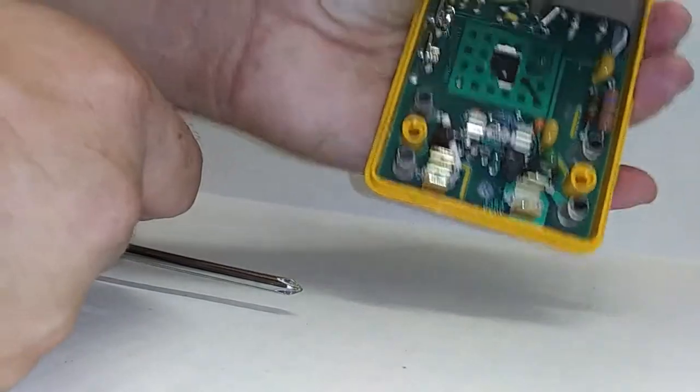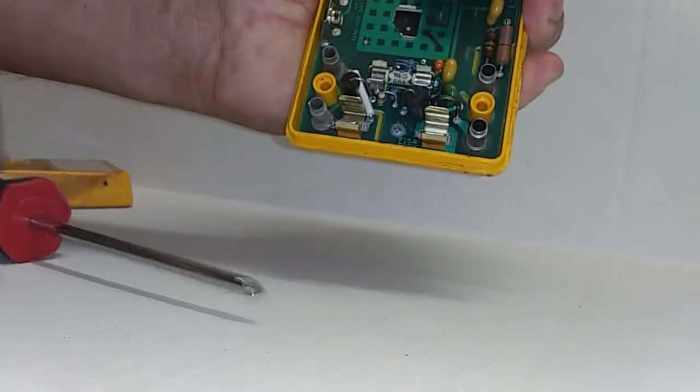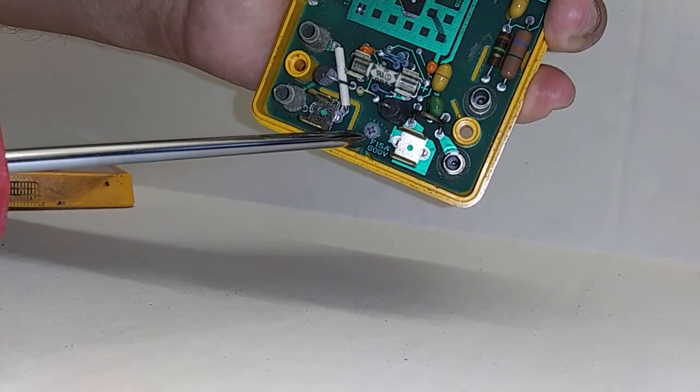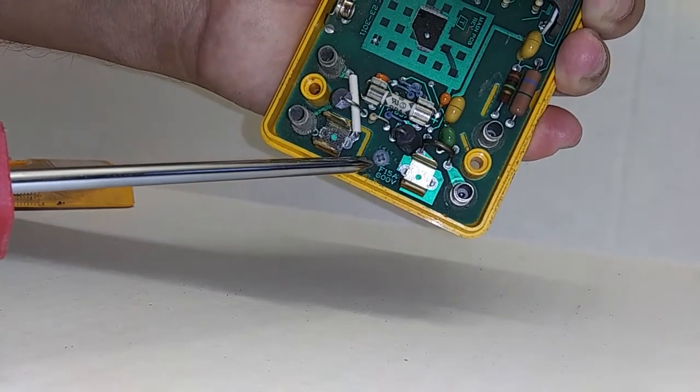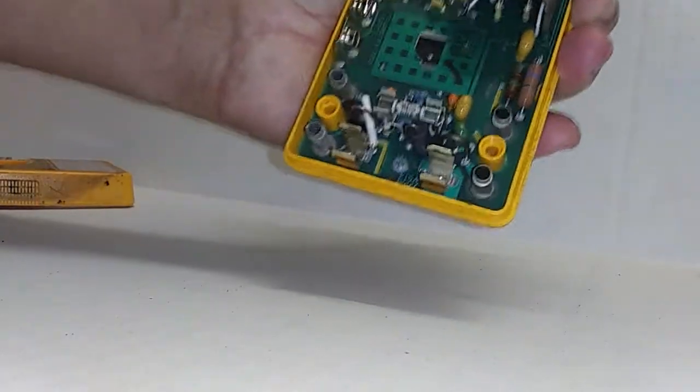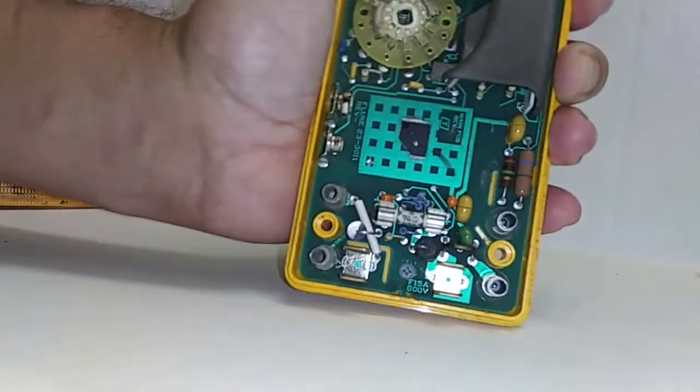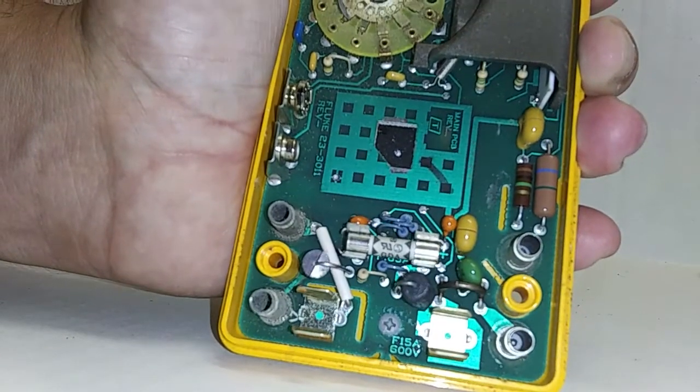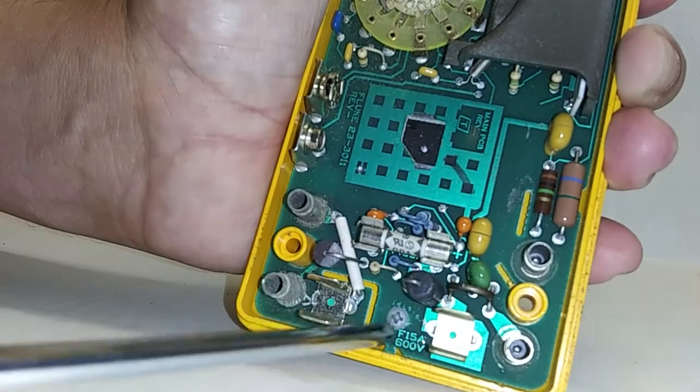If you're not sure, Fluke's PCB boards are always labeled. You can see down here, right here underneath where the screw is next to the screw, this is a F15 and 600 volts. And that's how you can always determine what type of fuse you're going to need. It's there right next to the screw and we're going to remove this screw right here.